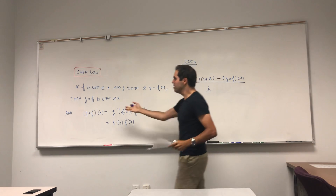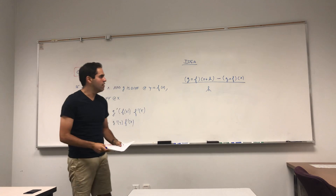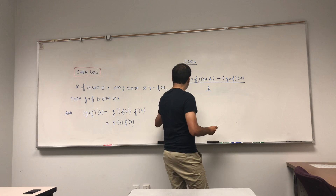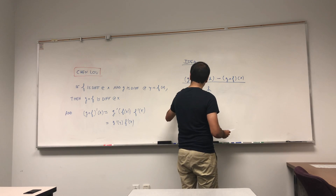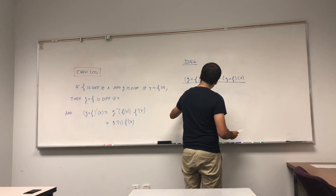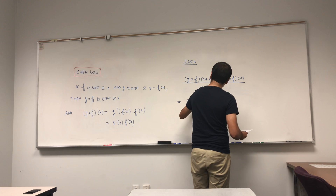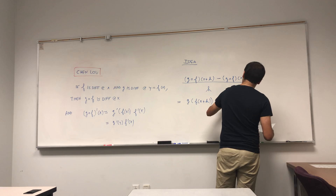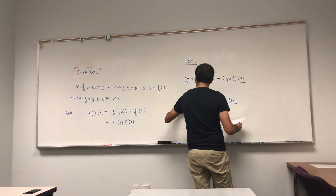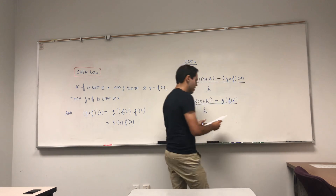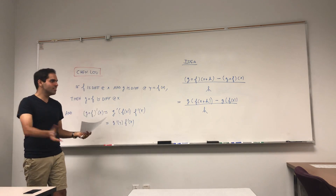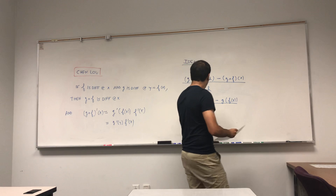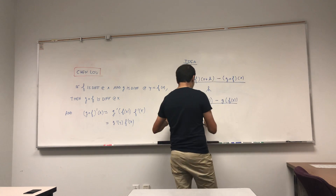The limit as h goes to zero of that gives you the derivative g composed with f prime. Writing it out, that's the limit of g of f of x plus h, minus g of f of x, divided by h. Now, heuristically, let's apply a neat little trick: divide top and bottom by f of x plus h minus f of x.